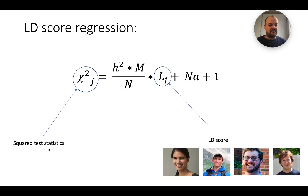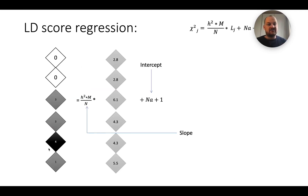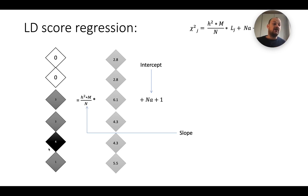Credit to Hilary Finucane, Brendan Bulik-Sullivan, Ben Neale, and Alkes Price, who wrote the first papers on this relationship. The chi-square statistics from your GWAS are regressed on LD scores, which reflect how well each SNP tags its neighbors. SNPs that tag more neighbors are expected to have higher test statistics. The slope of that regression reflects heritability, because the other unknowns — sample size and M — are known to us. The intercept reflects things that do not correlate with LD score, such as population stratification. This allows us to separate true signal from signal introduced by population stratification.